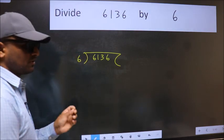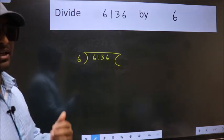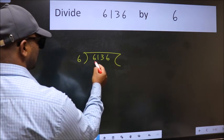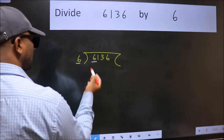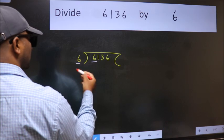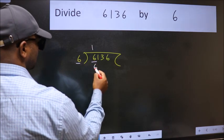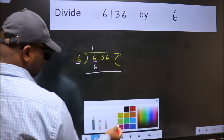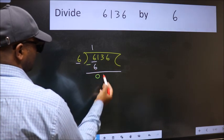This is your step 1. Next, here we have 6 and here 6. When do we get 6 in 6 table? 6 once is 6. Now we should subtract. We get 0.